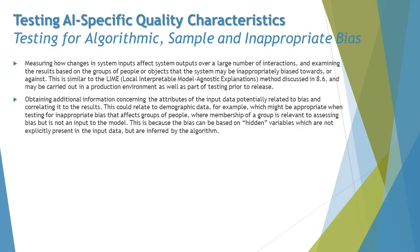Further, this involves measuring how changes in system inputs affect system outputs over a large number of interactions, and examining results based on groups of people or objects that the system may be inappropriately biased towards or against. This is similar to LIME — Local Interpretable Model-Agnostic Explanations — which will be discussed in section 8.6, and may be carried out in the production environment as well as prior to release.